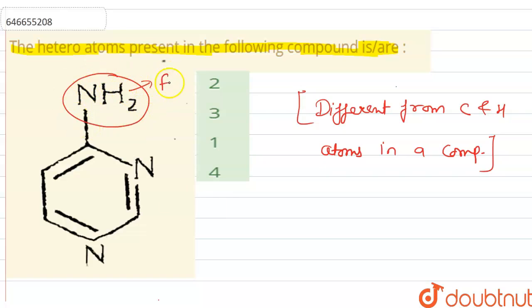In this compound we can see that this NH2 group behaves as a functional group. But in this cyclic compound, as we go from this carbon, carbon, then hydrogen, we observe one nitrogen. This nitrogen is different from carbon and hydrogen, so this must be a hetero atom.